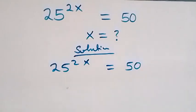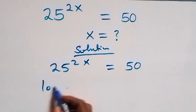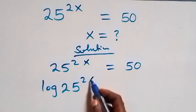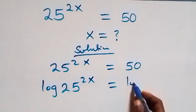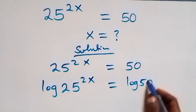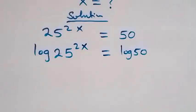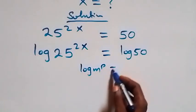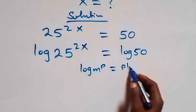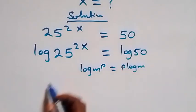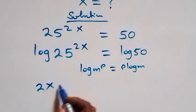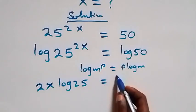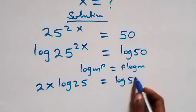Here we take the log on both sides. That is, we have log of 25 raised to power 2x equals to log 50. Then we apply the power law of logarithm: log m raised to power p is the same as p times log m. So what we have becomes 2x log 25 equals to log 50.